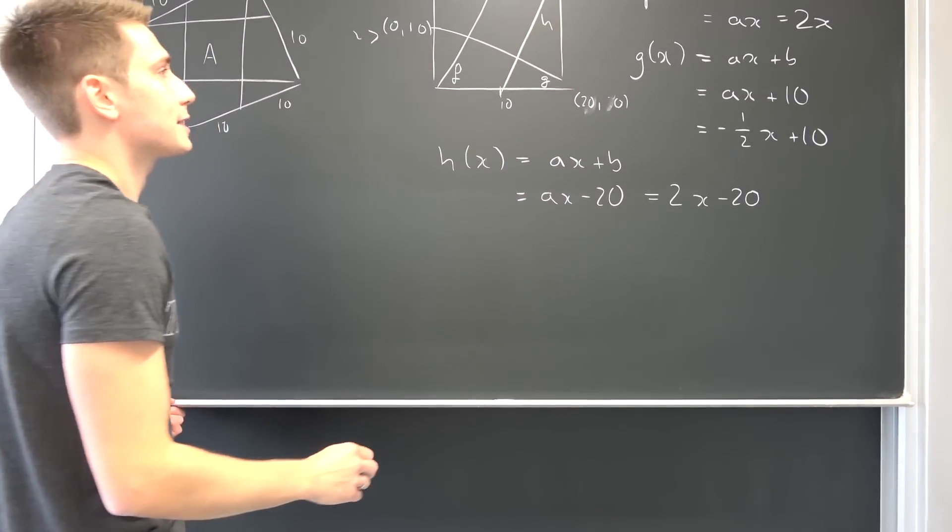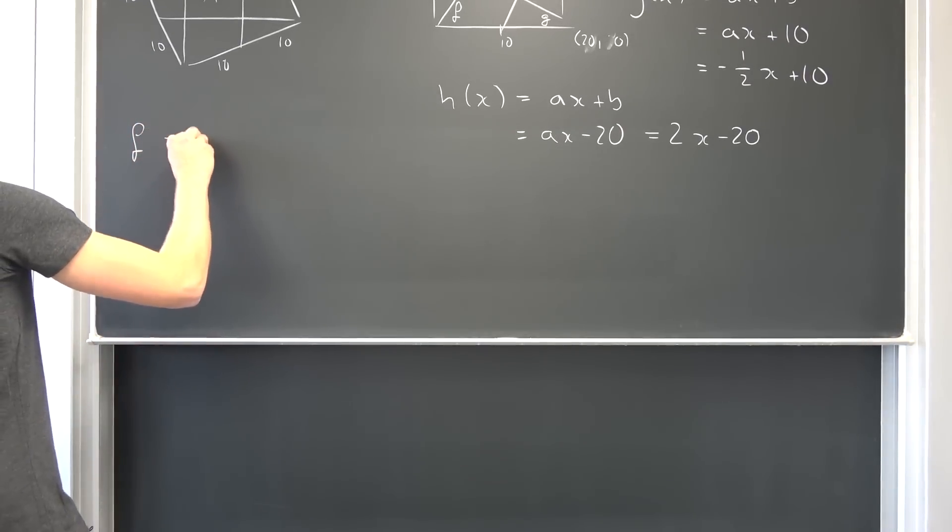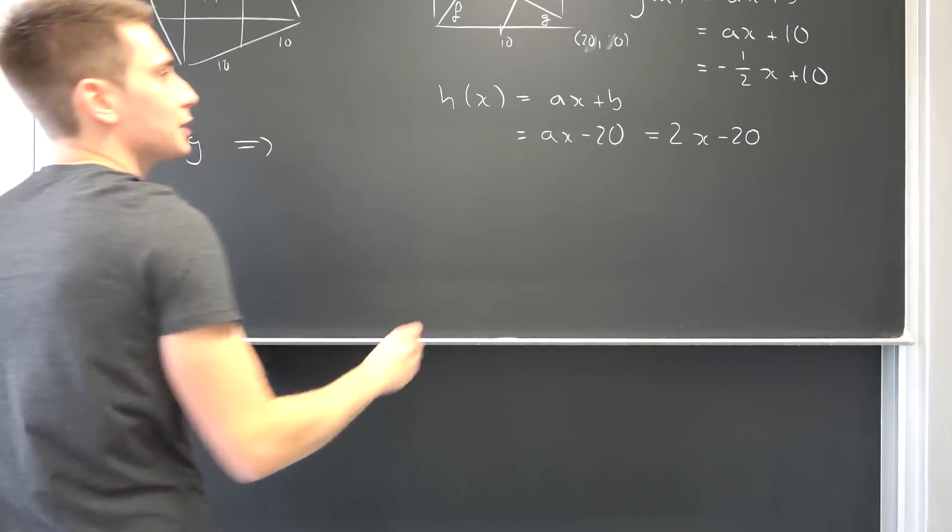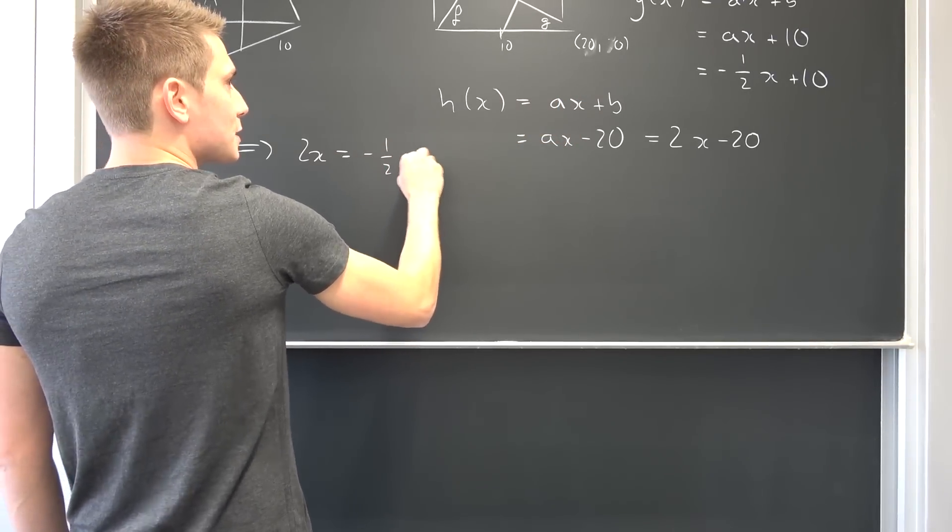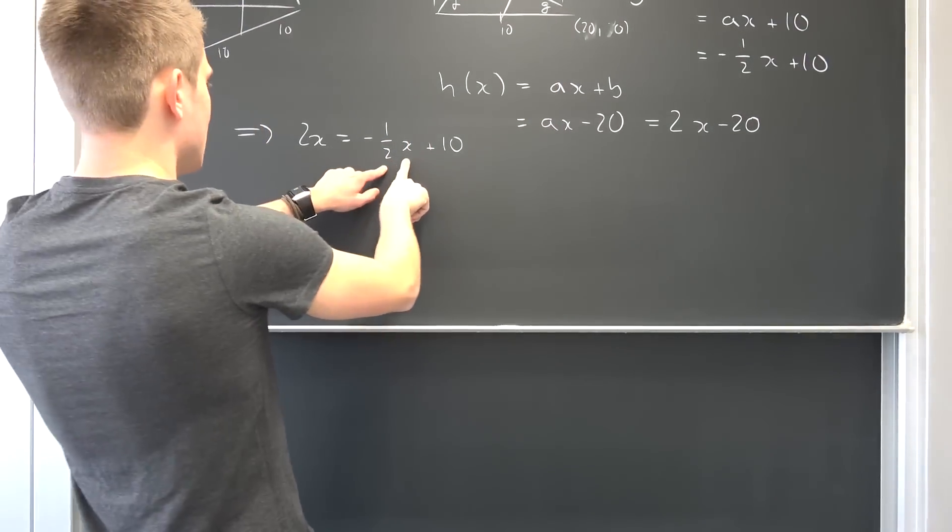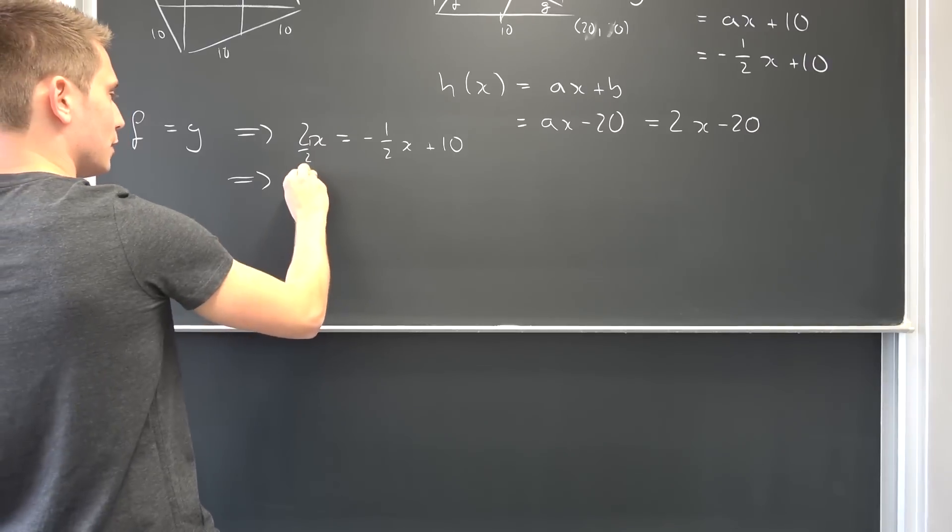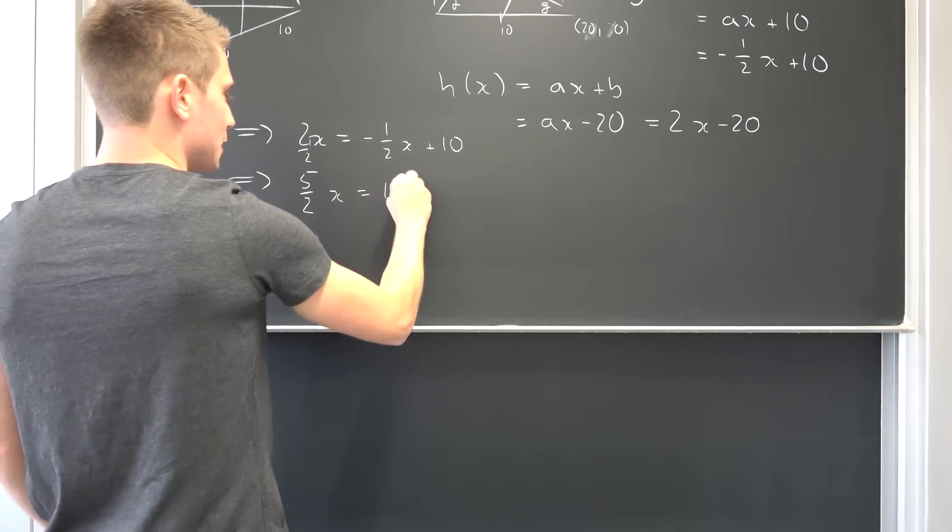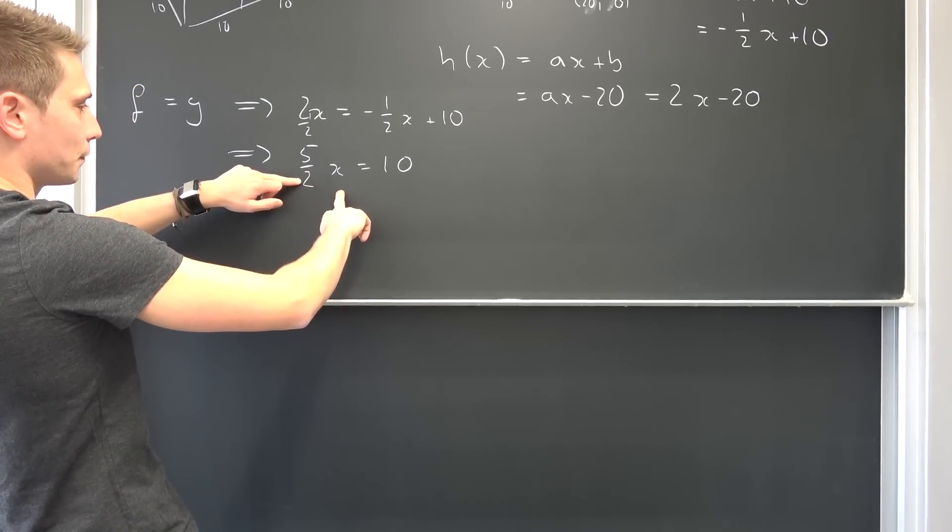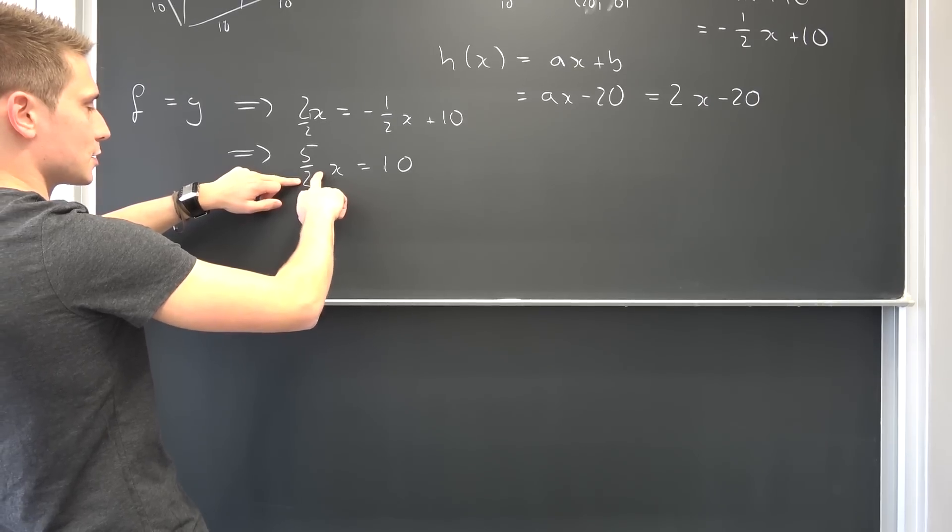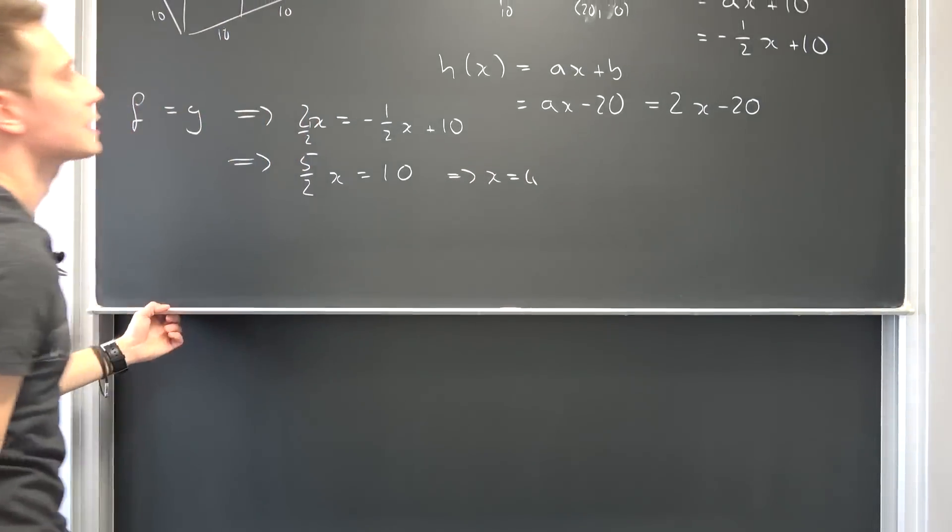Now this is good. Let us find out the intersection points. At first f and g, so when is f equal to g? Well this is exactly the case when we have 2x being equal to negative 1 half x plus 10. Meaning overall we can add this on both sides, meaning this is nothing but 4 over 2, so we have 5 over 2 times x being equal to 10. Now we can divide both sides by 5 over 2, leaving us overall with 4.